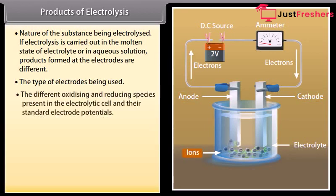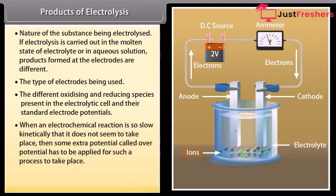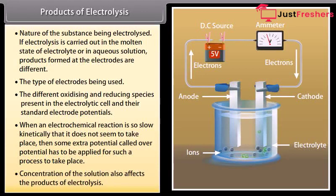The different oxidizing and reducing species present in the electrolytic cell and their standard electrode potentials. When an electrochemical reaction is so slow kinetically that it does not seem to take place, then some extra potential called over potential has to be applied for such a process to take place. Concentration of the solution also affects the products of electrolysis.